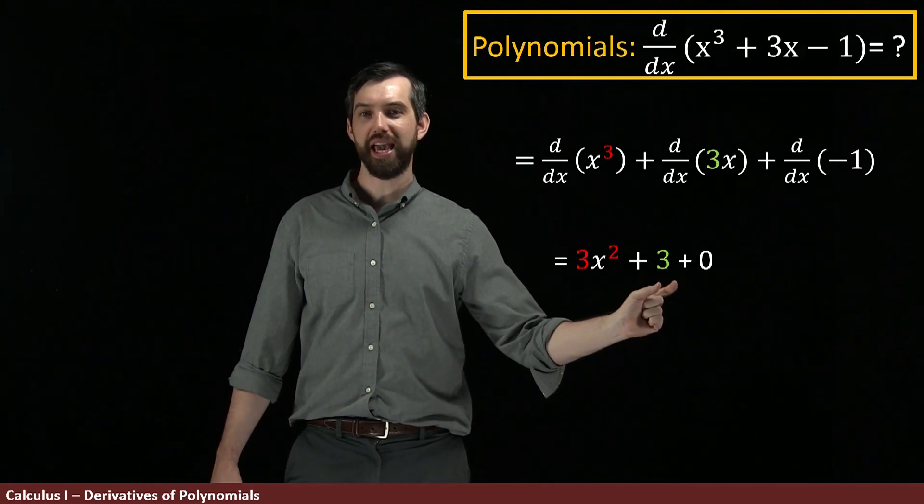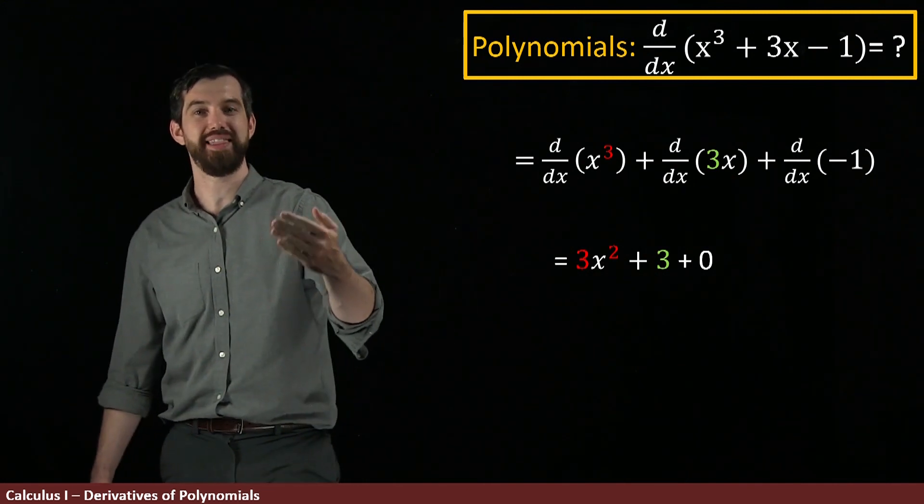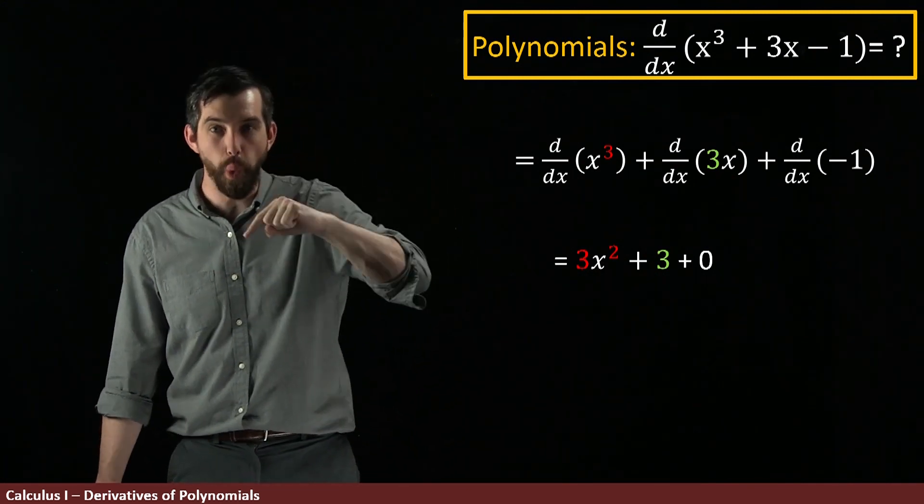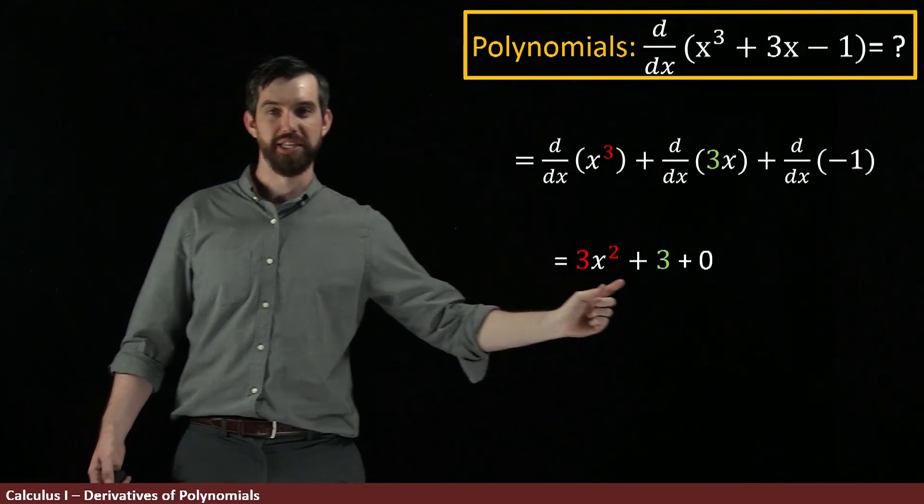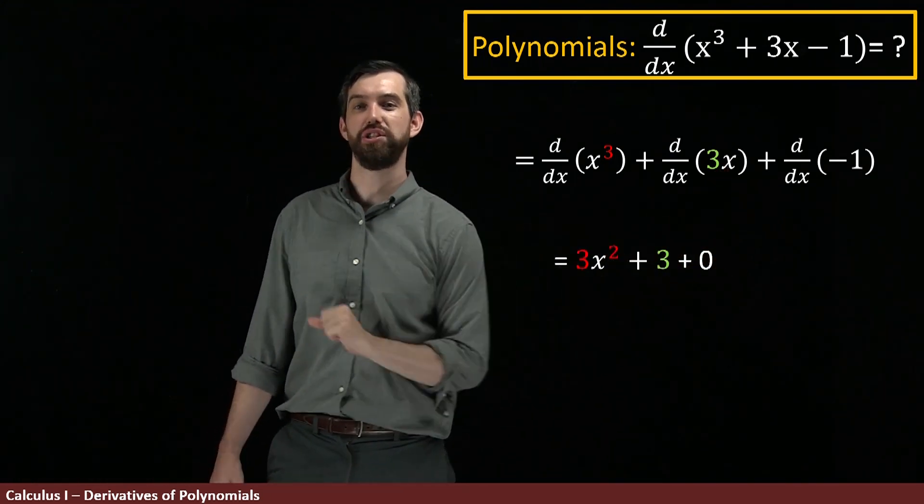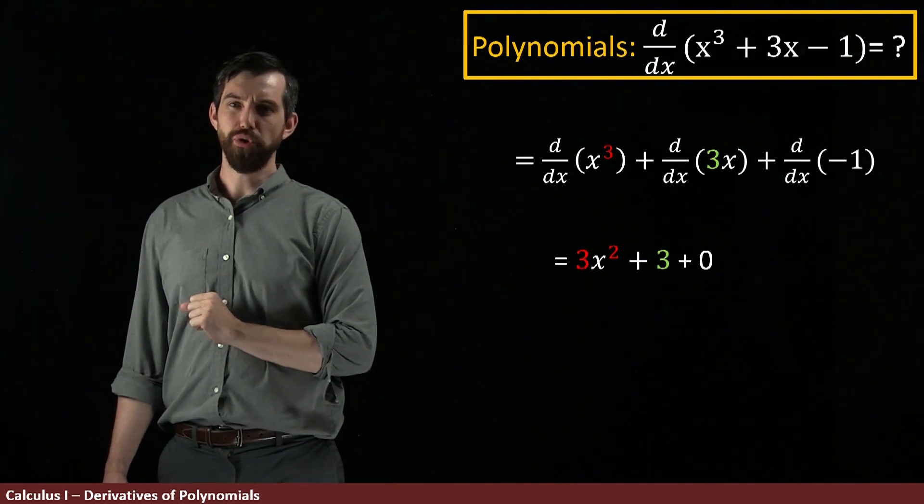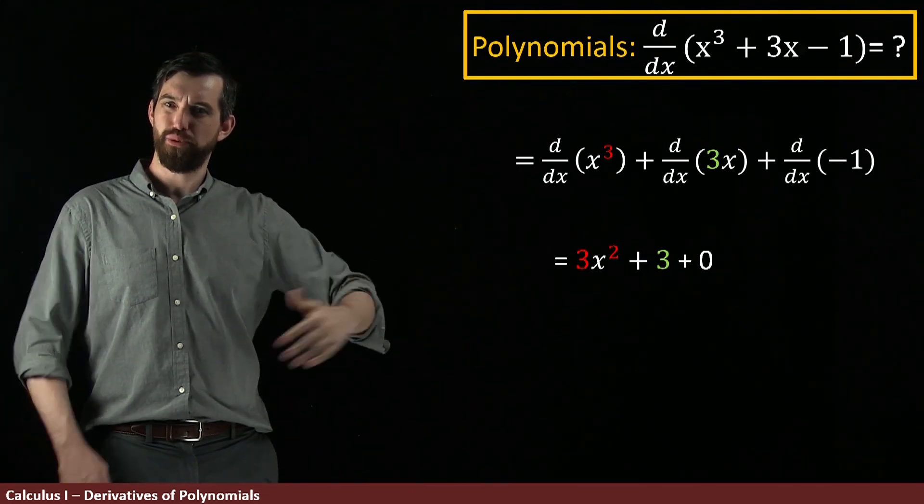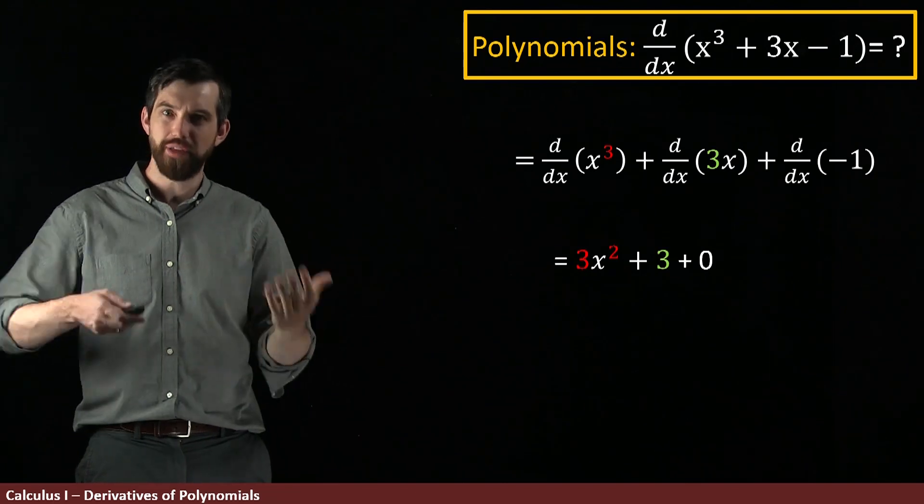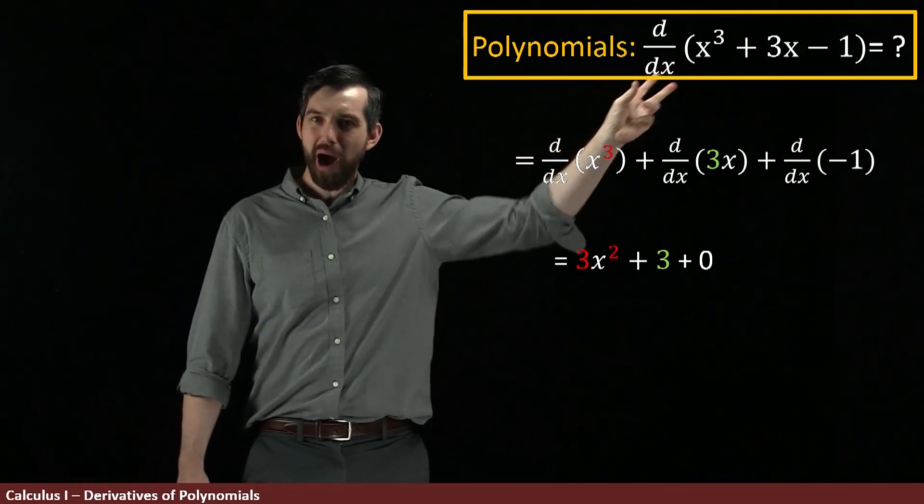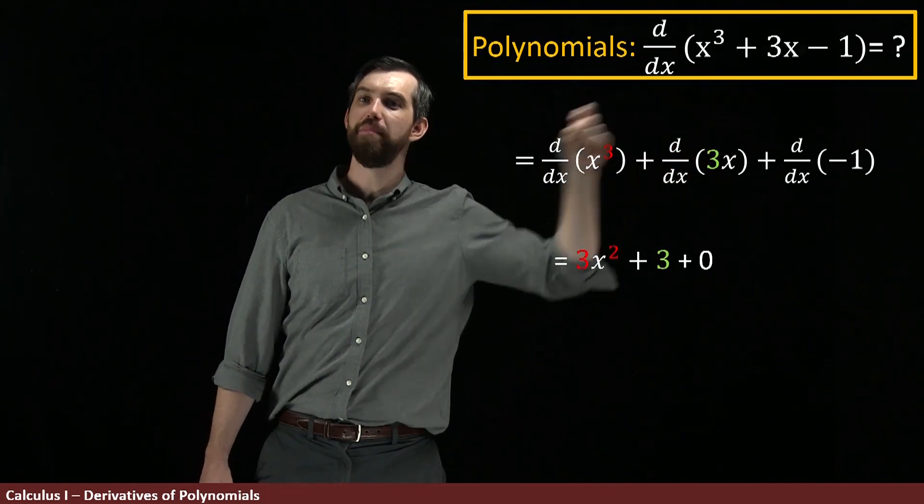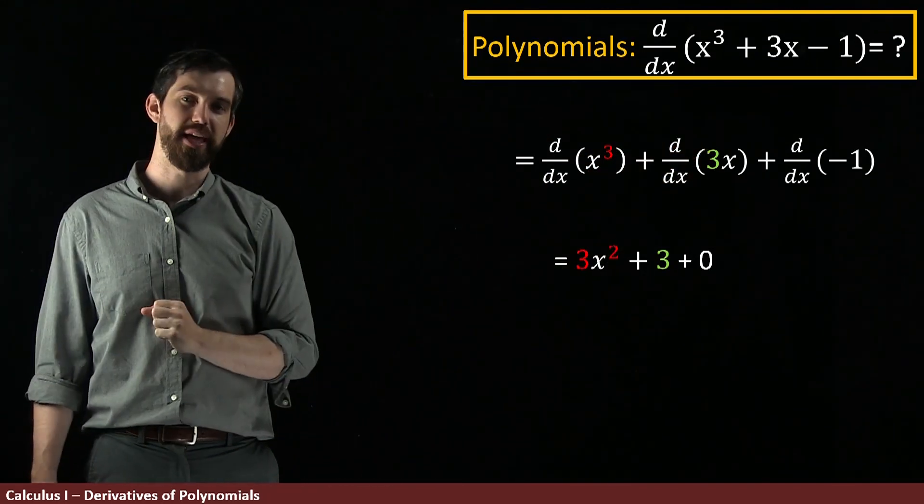Then, scalar multiplication rule together with the fact that x to the 1 goes to 1x to the 0. And x to the 0 is just 1. So, that's another way of putting it. The 3 and the derivative of a constant is just going to be 0. So, a derivative of a polynomial is actually pretty quick and easy after you get the hang of it. You just sort of do it term by term, applying the power rule as needed, and multiplying by whatever scalars you might have at the front, in this case, the 3.